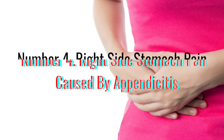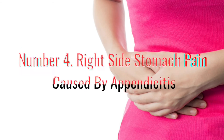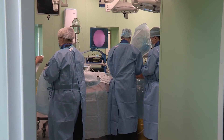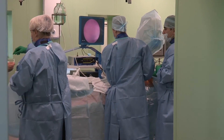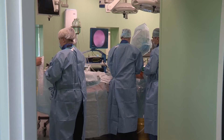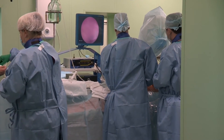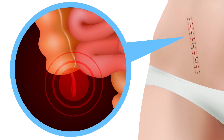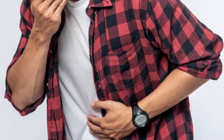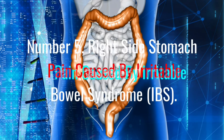Number four: right side stomach pain caused by appendicitis. Appendicitis is an inflammation of the appendix. It's a medical emergency that almost always requires surgery as soon as possible to remove the appendix. Luckily, you can live just fine without it. The appendix is a small organ located in the bottom right corner of your abdomen. If your appendix gets inflamed or swollen, it can cause sudden sharp or stabbing pain that gets worse when you move around or cough.